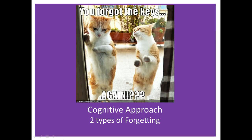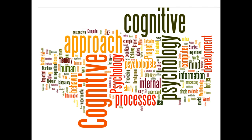Welcome to our sixth video on two types of forgetting in psychology. Forgetting is the loss of ability to recall something a person has previously learned. The question is: do we forget things because the memory trace is no longer there — no longer available — or do we forget because the memory is no longer accessible?